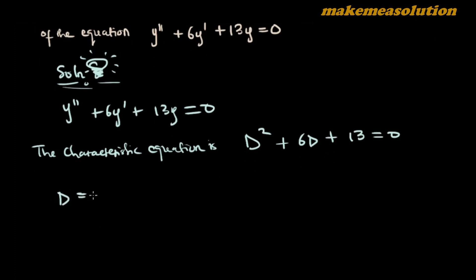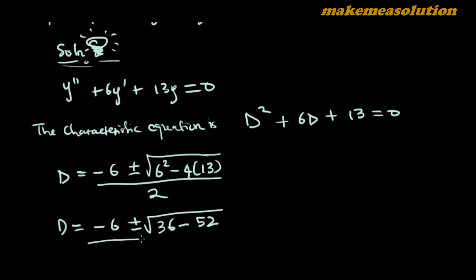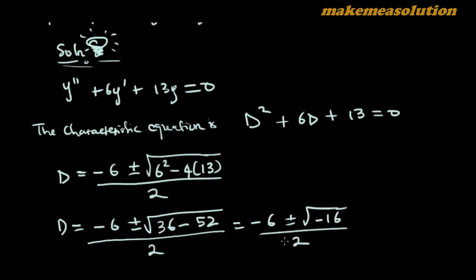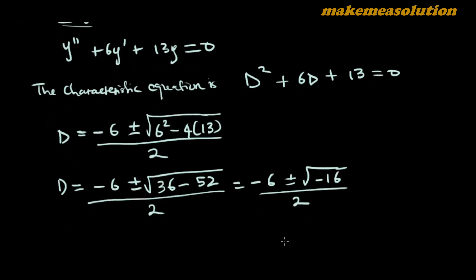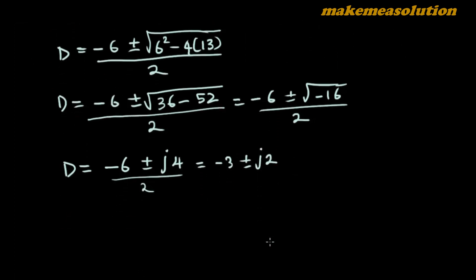Solving for d using the quadratic formula, I have d = (-6 ± √(6² - 4·1·13)) / 2. So I have d = (-6 ± √(-16)) / 2, which gives the square root of negative 16 over 2. Then d = (-6 ± j4) / 2, which results in -3 ± j2. So this is d.